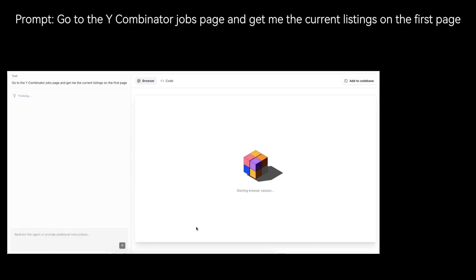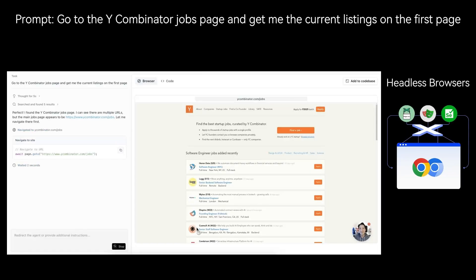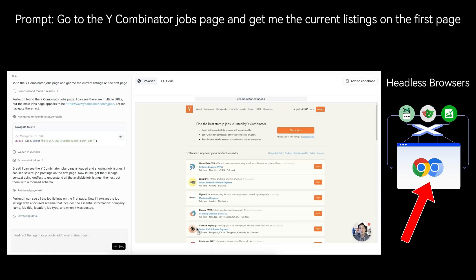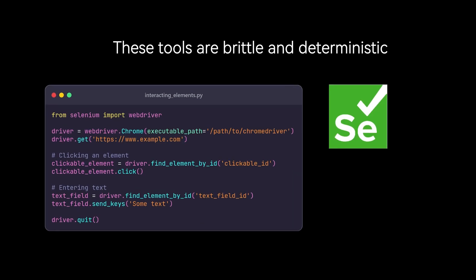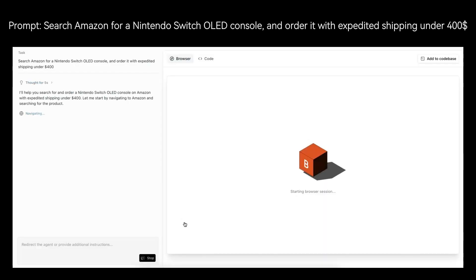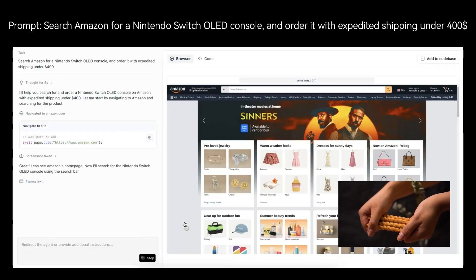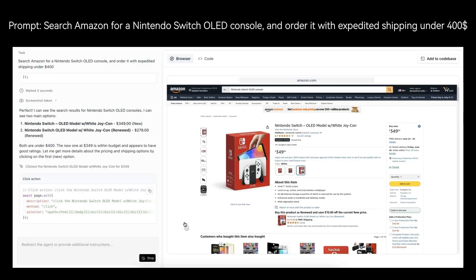If you've ever needed to pull data or automate a task on a website, you've likely entered the world of headless browsers. These are real browsers like Chrome that run on a server without a visible UI, allowing you to control them with code. For years, this meant using libraries like Selenium, Puppeteer, or Playwright. The problem is these tools are brittle and deterministic. You write a rigid script that gives the browser step-by-step instructions. Find this exact CSS selector, click this specific ID. It's powerful, but that brittleness means your script breaks the moment a developer changes a class name, forcing you into constant, tedious maintenance.